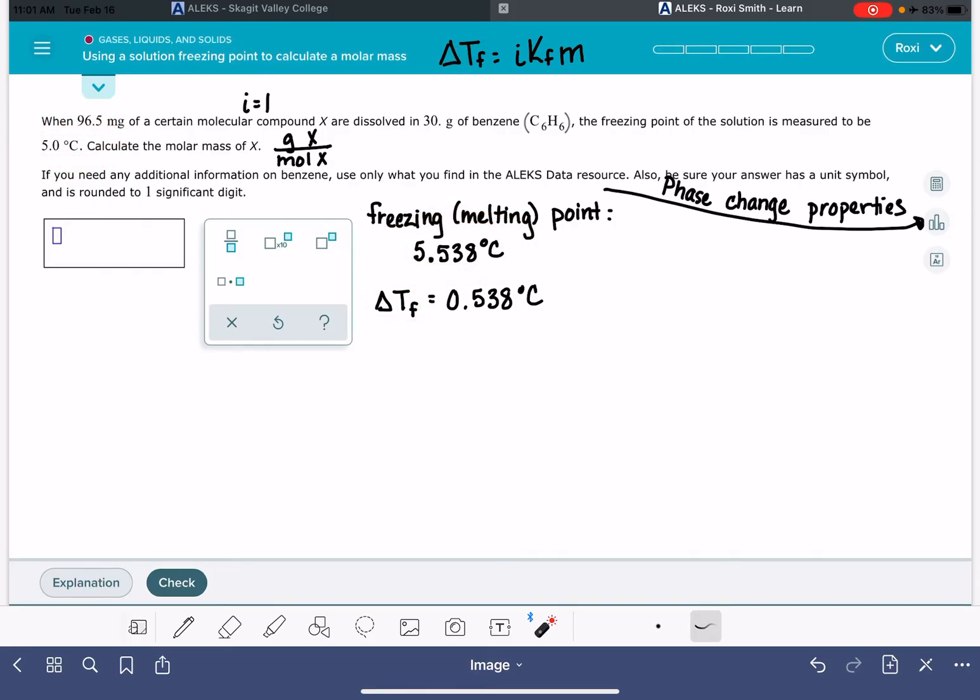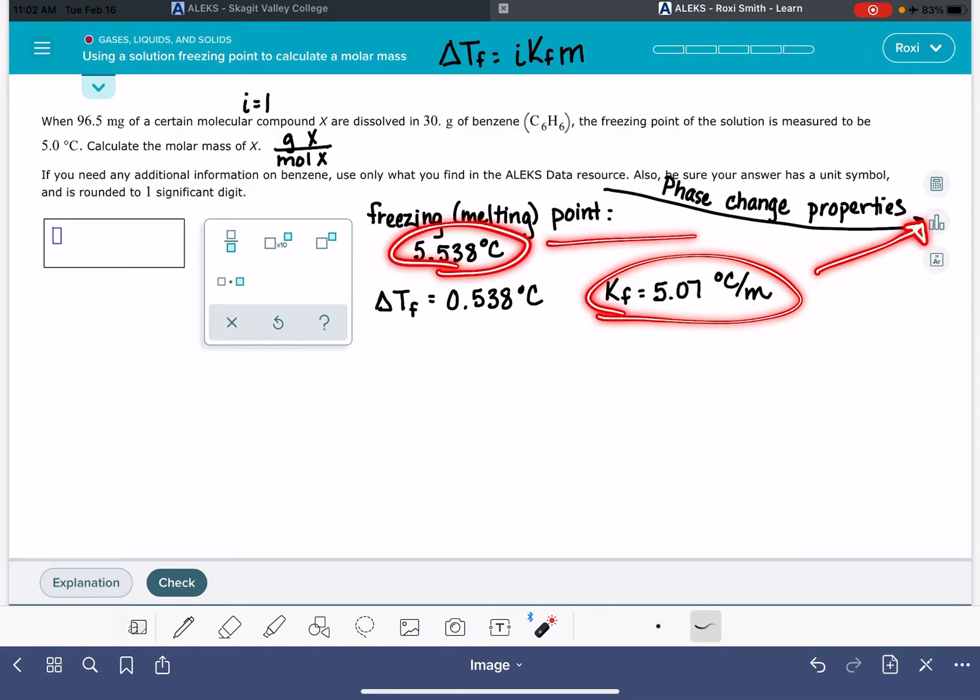So we've got this part figured out and we know the value of I - it's one. The value of Kf we're going to get from the ALEKS data table right here for benzene. The value of Kf is 5.07 degrees C per molality. So this number I'm getting from here and this number I'm also getting from here. Now we have Kf, we have I, we have delta Tf. We can calculate the molality.